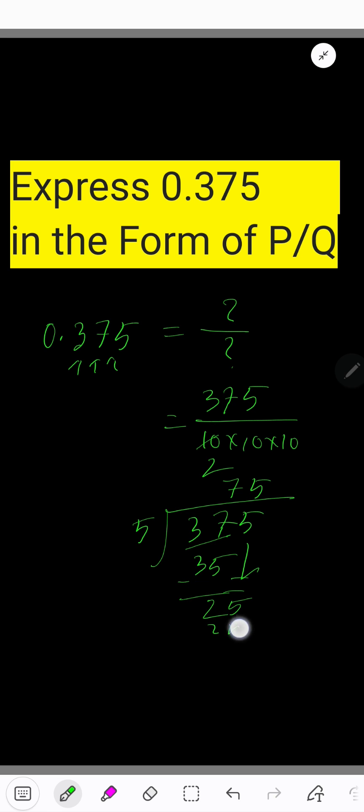So if you divide this 375 by 5, you will get 75. Again, we have to find out another number that divides 75 and 10. Again, 5, as its last digit is 5.